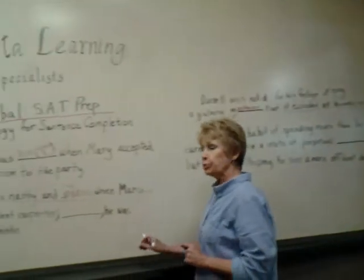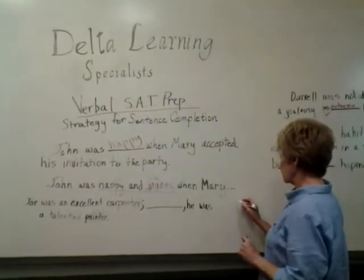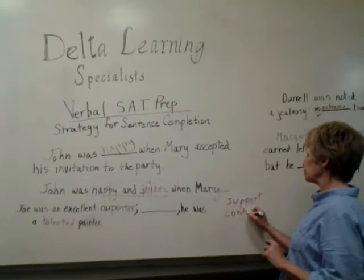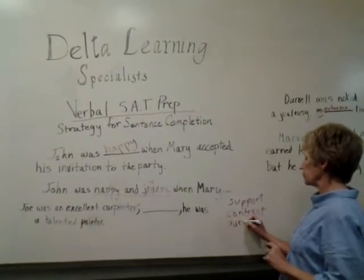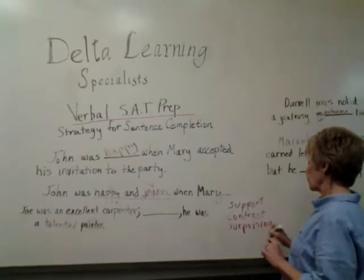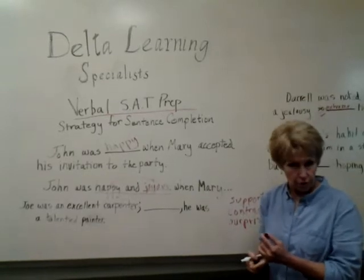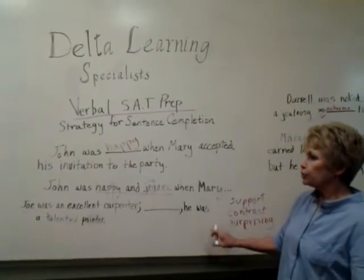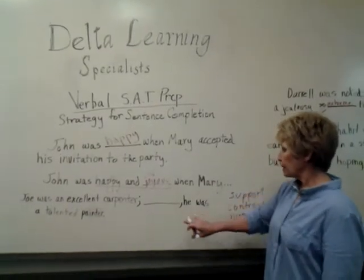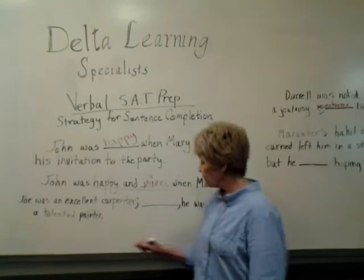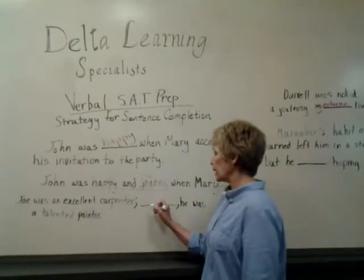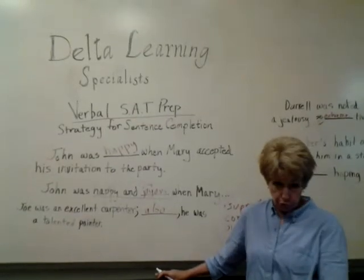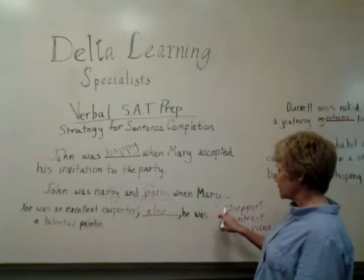Other kinds of clues you might find on the SAT include support words, contrast words, surprising words, cause and effect words, and watch out for negatives and double negatives. Here's an example for these: 'Joe was an excellent carpenter. Blank. He was a talented painter.' We're going with a support signal — a word like also, in addition, additionally, moreover — words like that. That is a support signal.